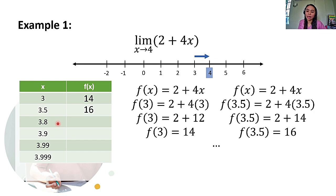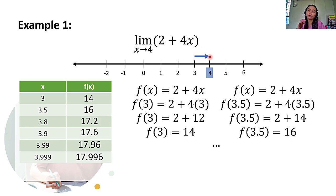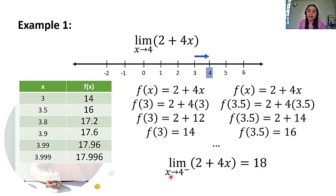So, upon computing the function values of these x values, ito yung lalabas. Ngayon, meron na tayong table of values, class. Ang kinonsider nating x values ay nasa kaliwa ng ating constant na 4, papalapit sa kanya from the left. So, habang lumalapit siya kay 4, saan namang value lumalapit yung ating nakompute na f of x? Ito naman ay lumalapit sa 18. Hence, the limit of 2 plus 4x as x approaches 4 from the left is equal to 18.